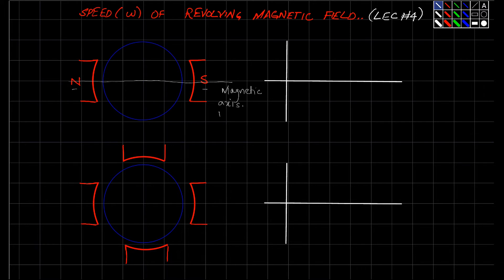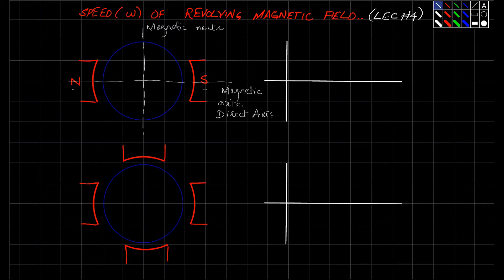The magnetic axis is also called the direct axis, or D-axis. The line that passes perpendicularly through the center — the one that does not pass through the poles — is called the Magnetic Neutral Axis, or MNA. Another name for it is the Quadrature Axis, also called the Q-axis.